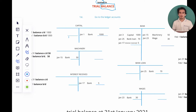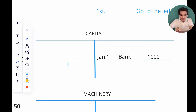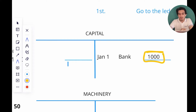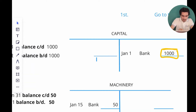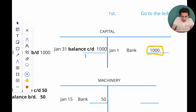I've made six ledger accounts here — there will be many more in real life, but for understanding purposes we have six: capital, bank, machinery, bank loan, interest received, and wages. Let's start by balancing each of them. For the capital account, on the credit side we have one thousand dollars and on the debit side we have nothing. This means I'll add a balance carried forward of one thousand dollars on the debit side, making the total equal to one thousand dollars.